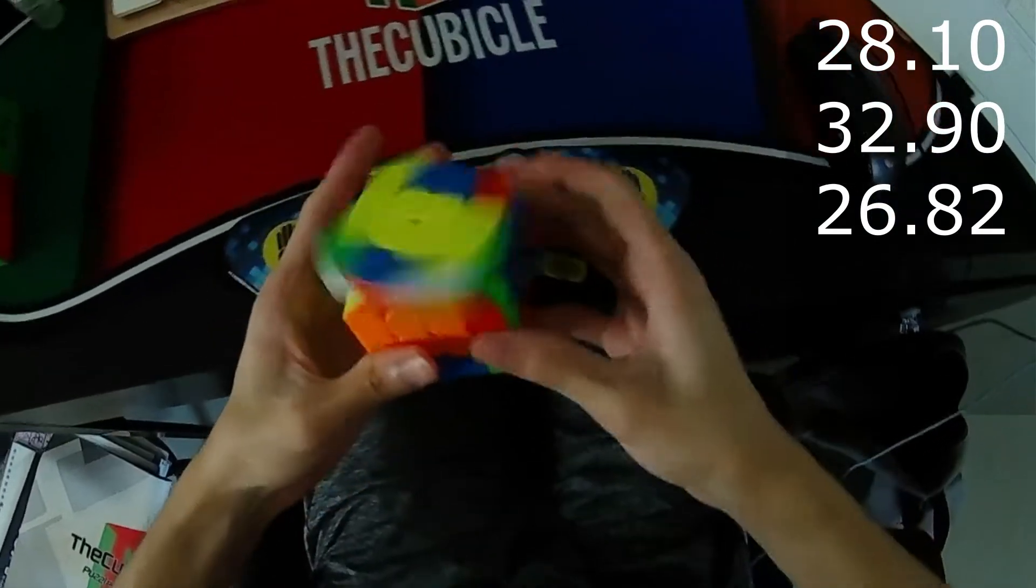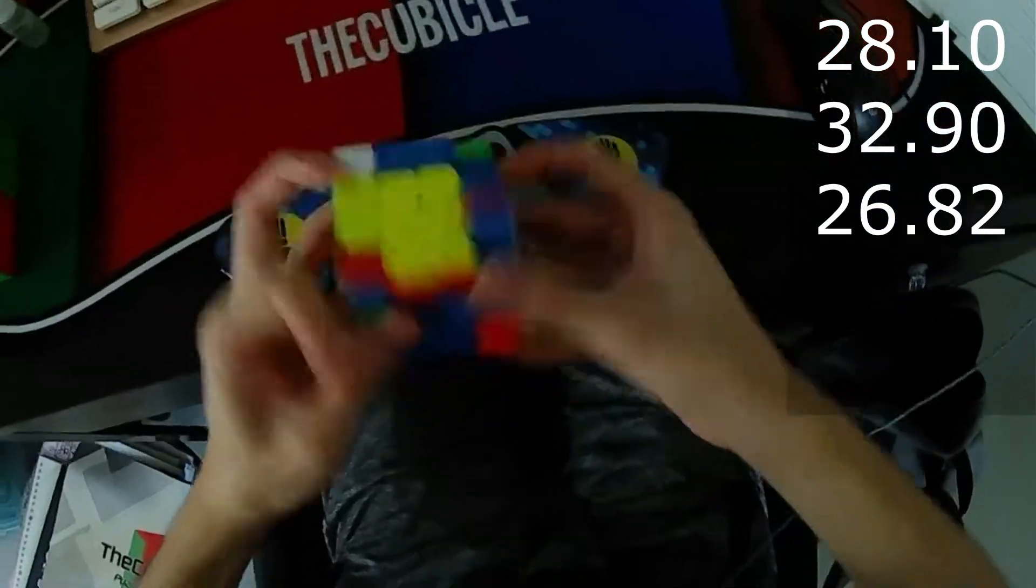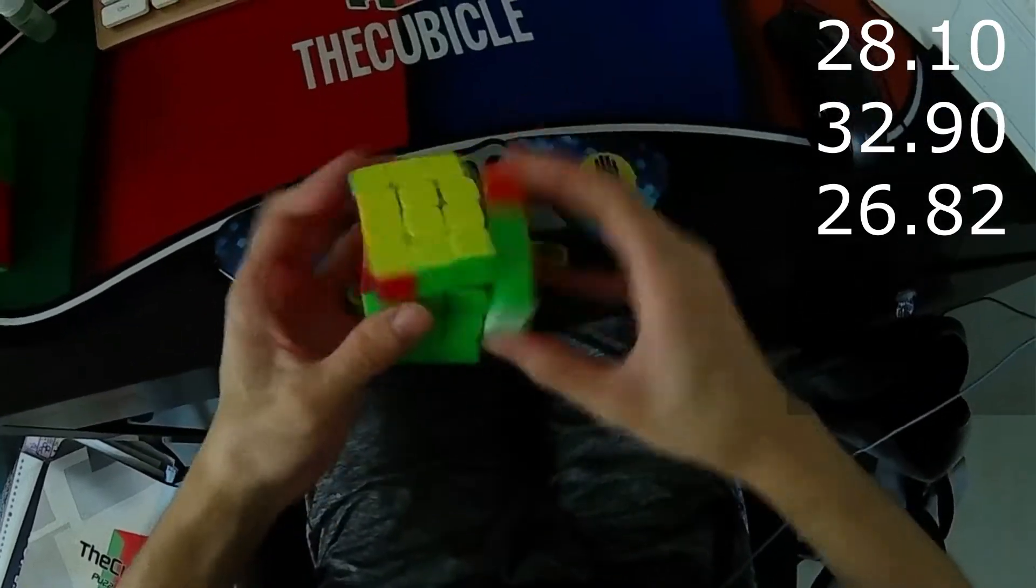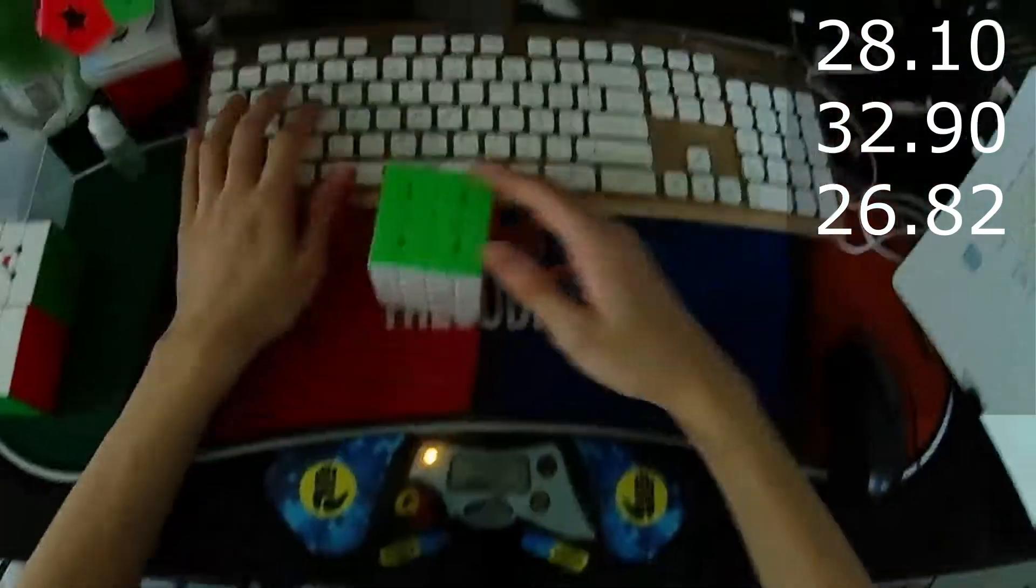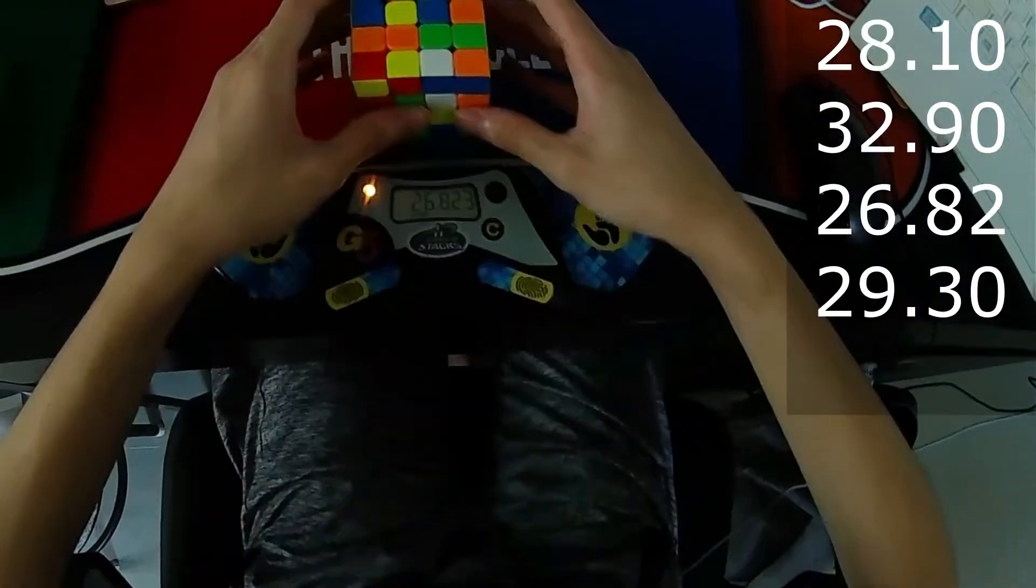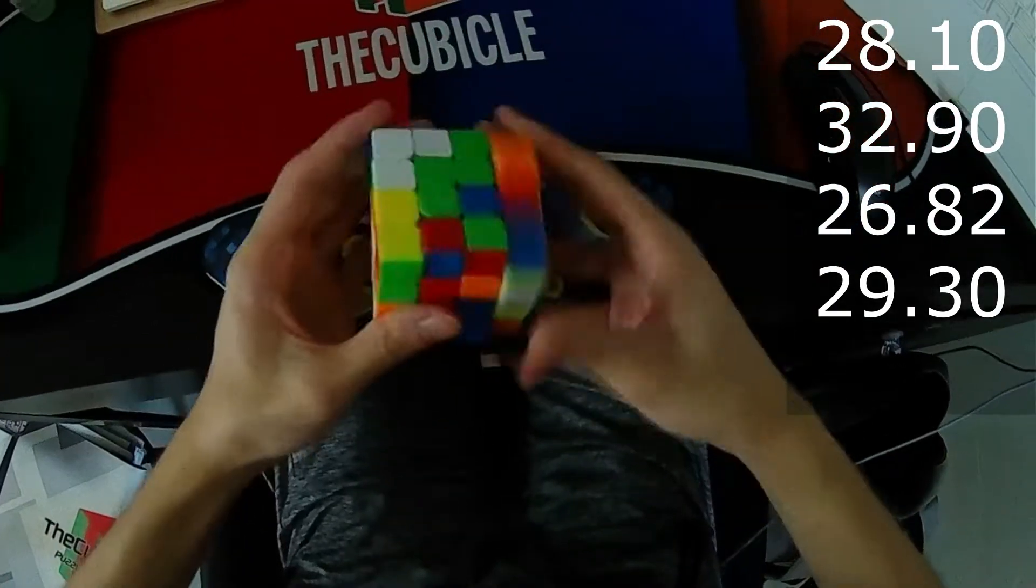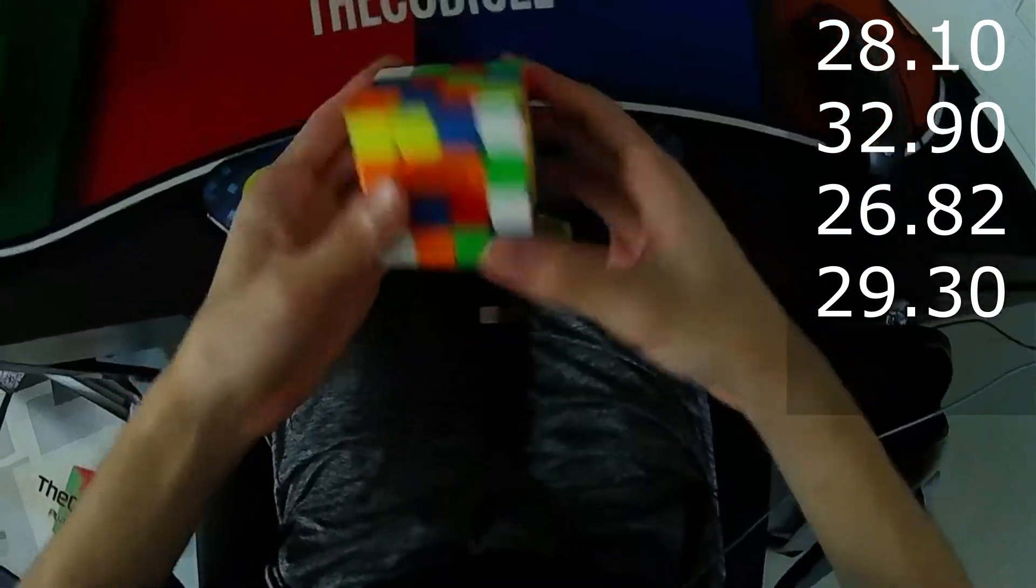So afterwards, I added three drops of Silk on the layers, and it just performed very well. I could tell that it is my main right now. I've never tried such an extremely nice 4x4 that doesn't lock up. And under this perfect tension, it doesn't pop at all.